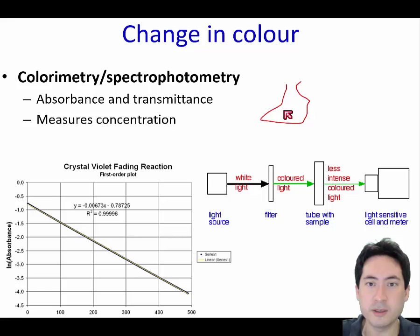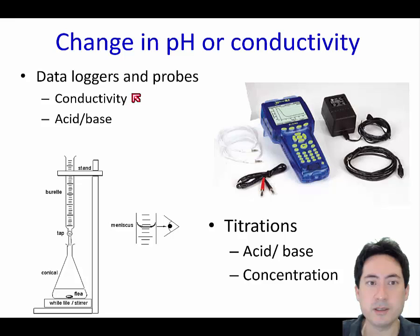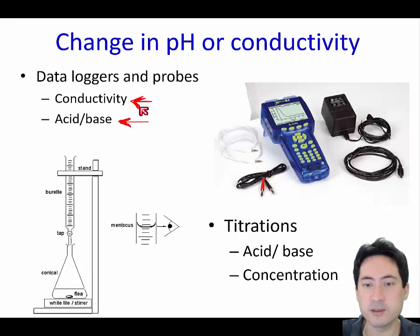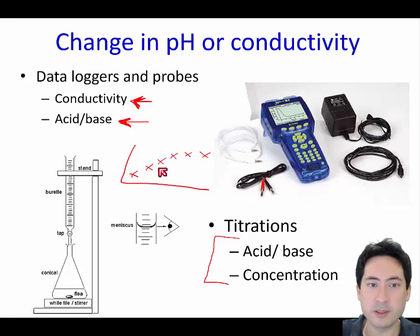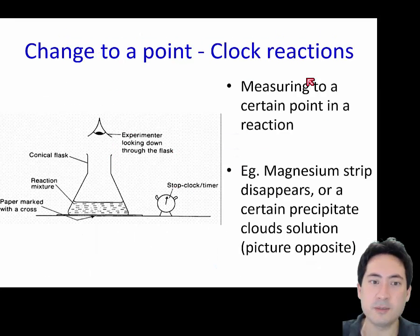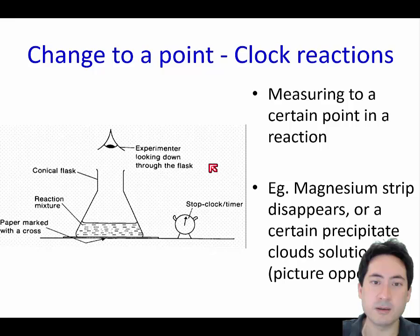A change in pH can be tracked as the reaction occurs, though an acid-base titration is more of an endpoint measurement and doesn't give you a true rate. Change in conductivity may help but also has problems with some reactions. What you really want to do is take constant readings over time rather than one final reading, because a single reading only gives you an average rate. A clock reaction — which tells you when a reaction has reached a certain point — is very limited for the same reason.